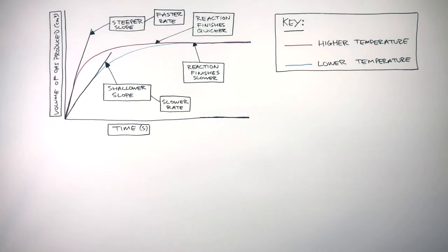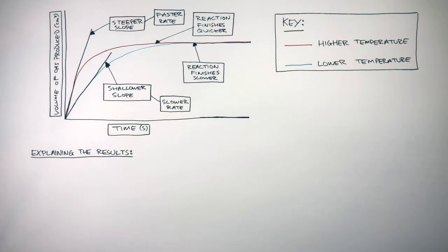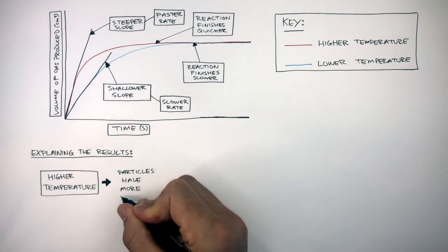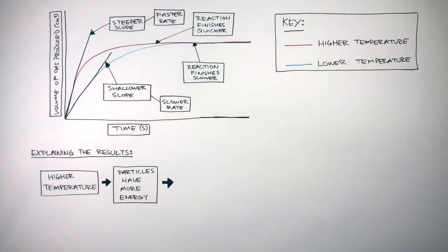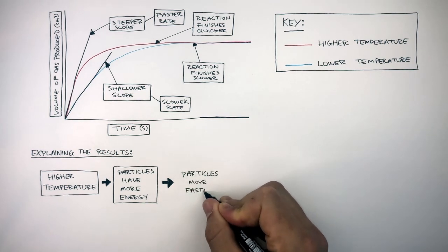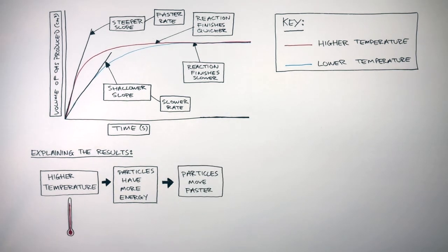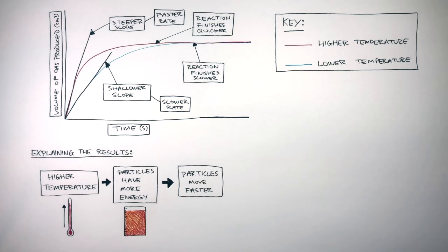We're now going to focus on explaining the results, focusing on the higher temperature curve. With the higher temperature, the particles have more energy. This causes the particles to move faster. Because of the increase in temperature, the particles absorb heat energy. They store more energy, causing them to move faster, as shown by the many vibration lines.